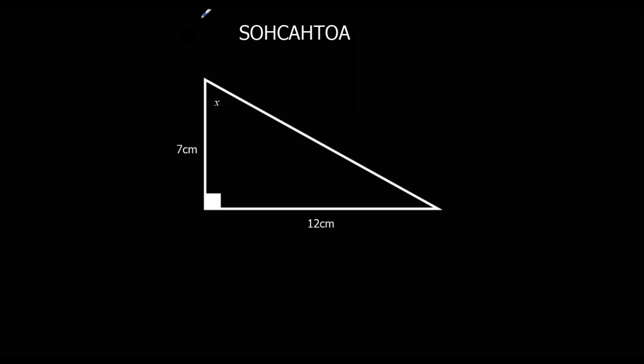Okay, so we've got H here, O here, A here. We're not using H. So, we're using TOA. Tan of the angle equals opposite over adjacent. Tan, in this example, tan x equals opposite over adjacent. To get tan away from x, we shift tan. So, it's shift tan, 12 over 7.